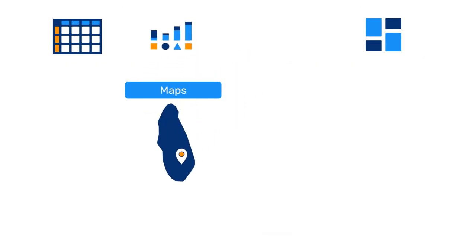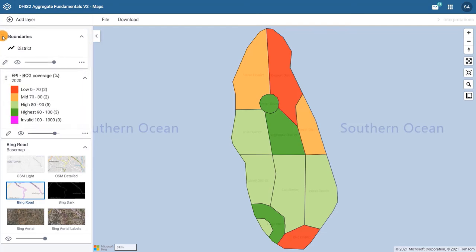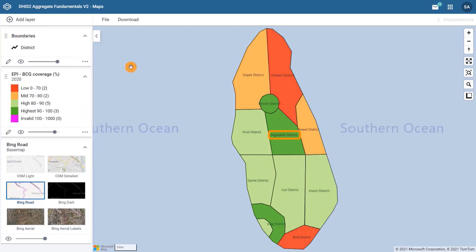The third visualization tool in DGIS-2 is maps, which relate geographical points or areas with specific data from your programs. DGIS-2 allows you to overlay data using map layers, providing a greater depth to your analysis.